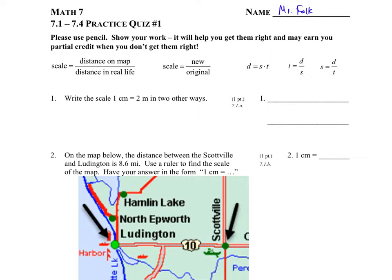Question one: write a scale in two different ways. Well, one way is to take that equal sign and just turn it into a colon — so one centimeter colon two meters. The other way to look at a scale is as a fraction, and the numerator is always the thing that comes first, so one centimeter over two meters. That's the answer to number one.